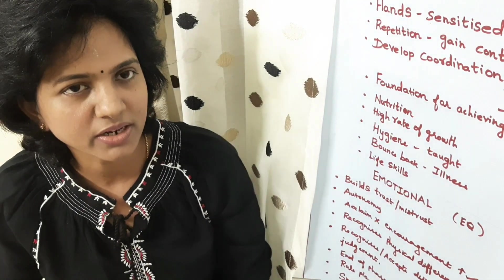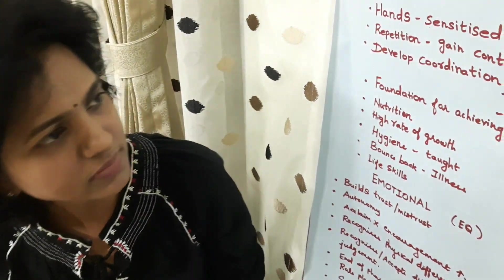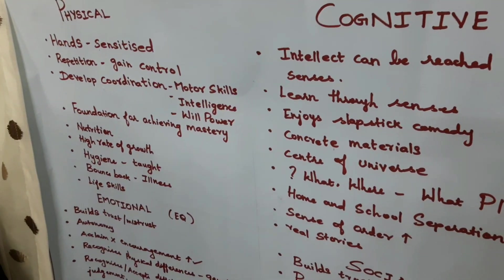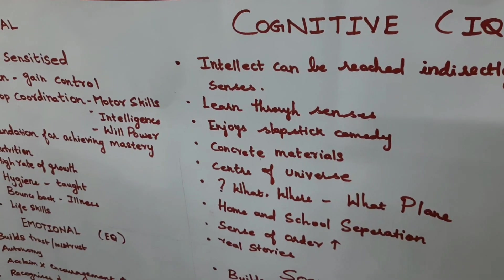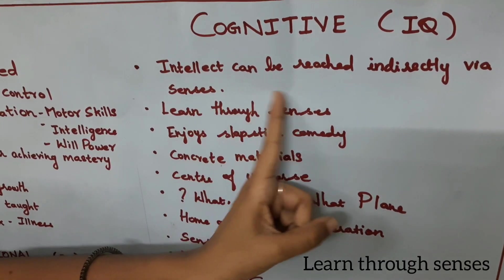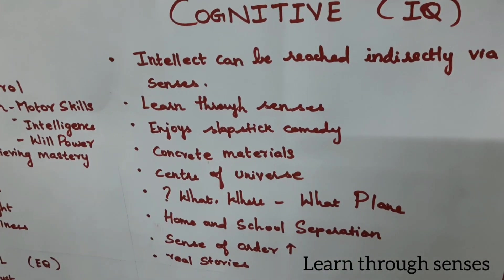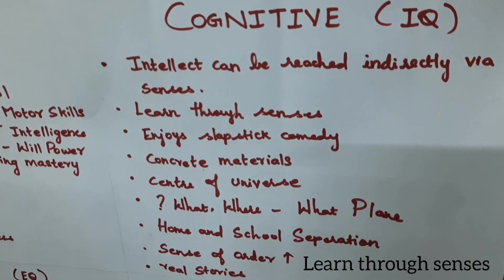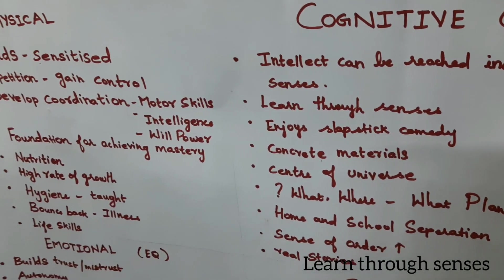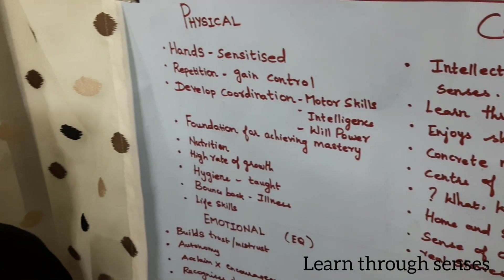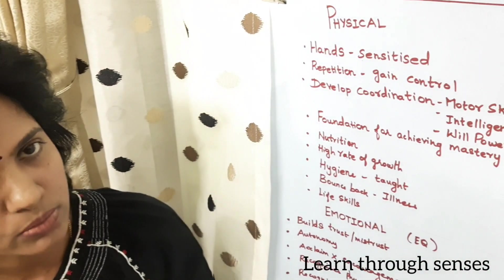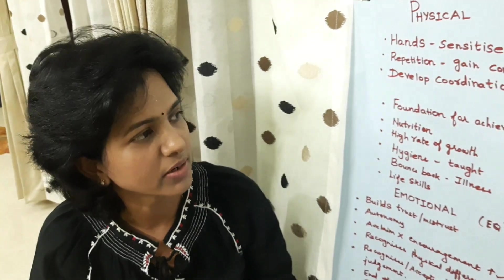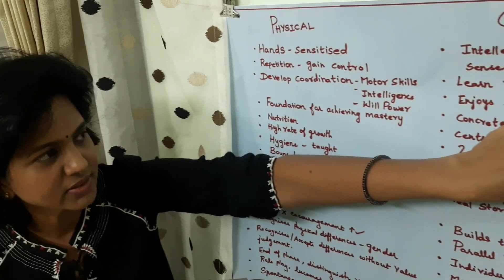Their eye-hand coordination gets developed through these activities. Moving on to cognitive or IQ needs: children aged 0 to 6 learn through their senses, so intellect can be reached indirectly. Through their visual sense, auditory sense, and muscular sense — whatever they do or listen to, they observe and learn.